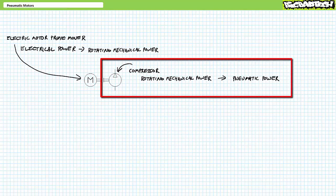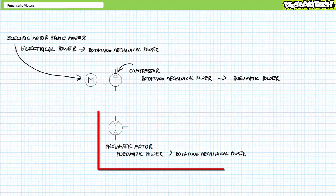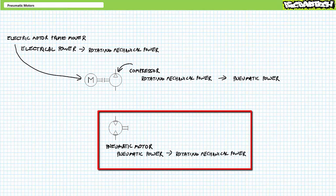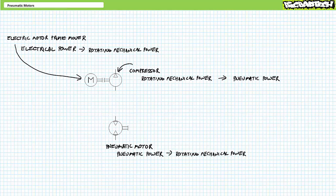Viewers will recall pneumatic compressors, analogous to pumps in a hydraulic system, are devices that convert the rotational mechanical power output of a prime mover to fluid power output. Pneumatic motors, or air motors in contrast, are actuators that convert pneumatic power input to rotational mechanical power output. Air motors are compressors in reverse.